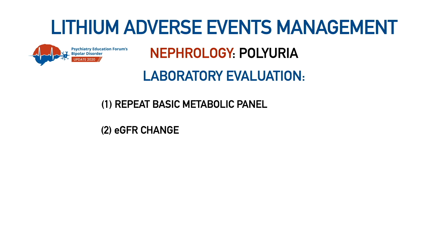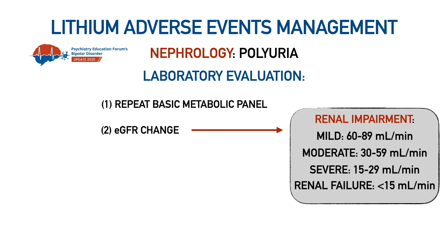If you see a decline in glomerular filtration rate — eGFR — that can tell you what level or classification of renal impairment your patient is in. Renal impairment is mostly classified as mild, moderate, severe, and renal failure based on eGFR values, and that tells you the severity of kidney damage.